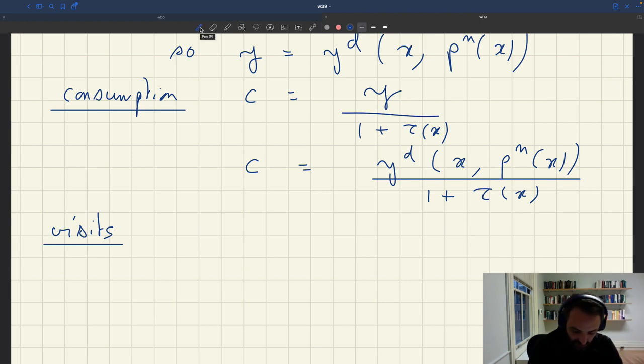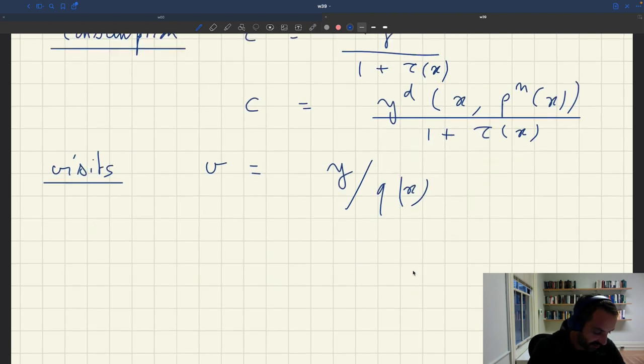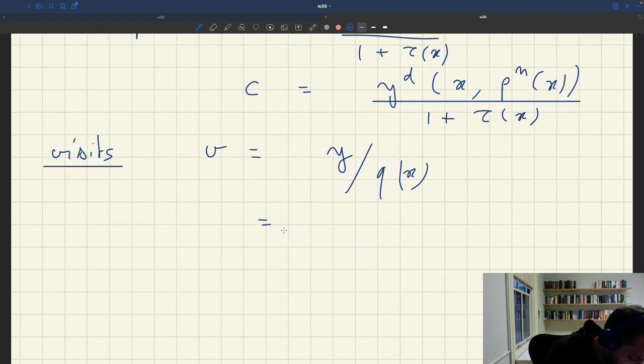And the last thing is to determine the number of visits. But this, we can see we'll be able to do it too. So we said the number of visits v was the output that households wanted to purchase divided by q(x), the probability that a visit is successful. So you make visits accounting for the probability of success to buy whatever you want to buy as a household.